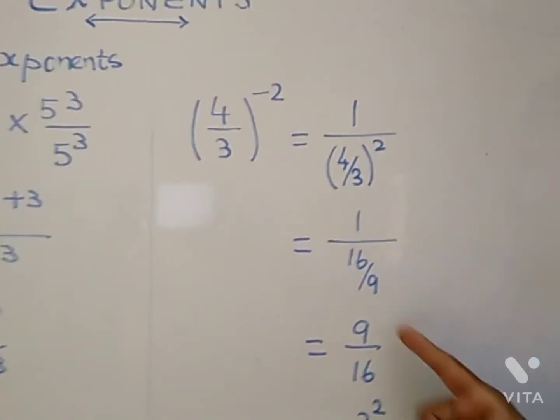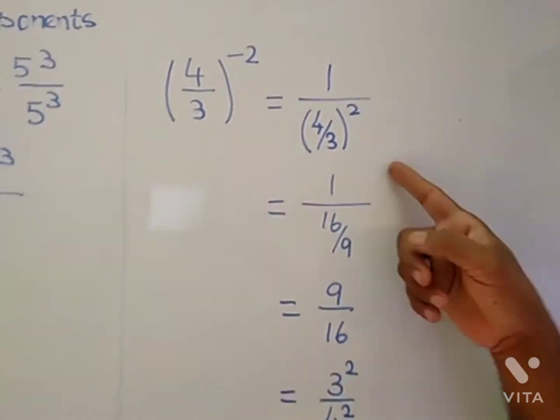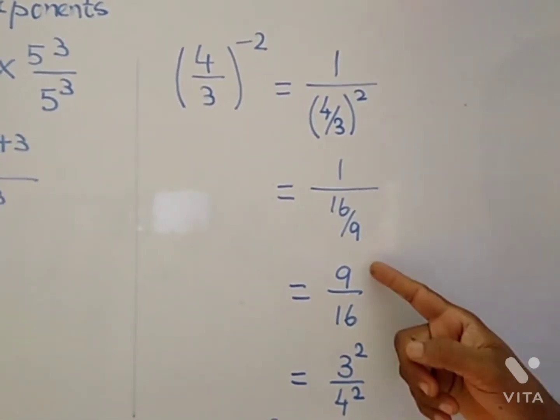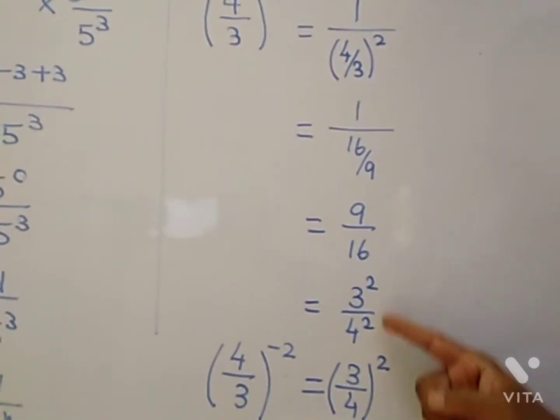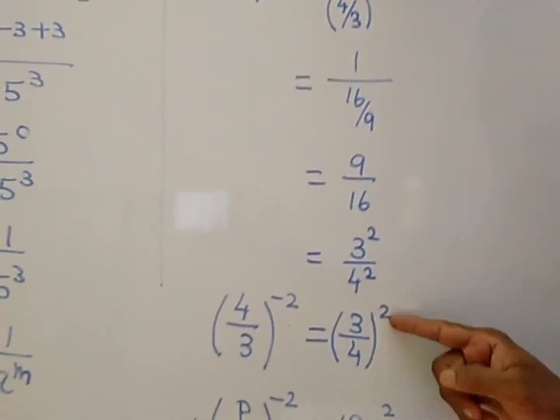This is nine by sixteen. Nine is three squared, sixteen is four squared. So three by four, four squared.